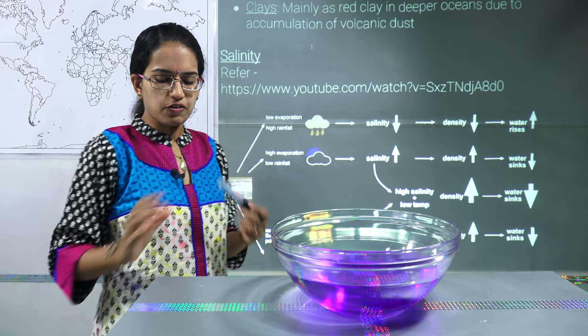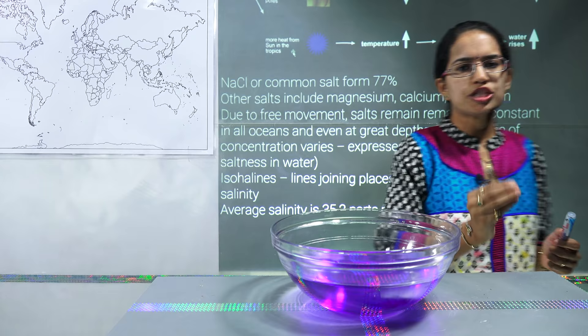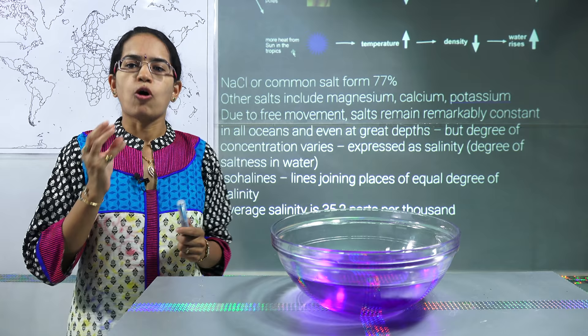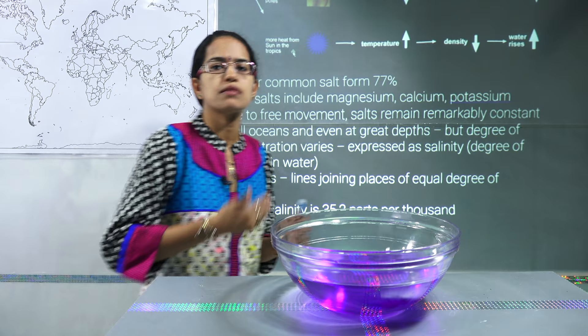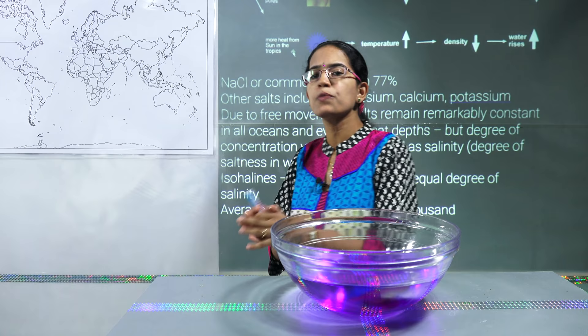Coming on to salinity — if we look at the ocean, 77 percent of the ocean's salt constituents are common salt or sodium chloride. However, besides sodium, you can see chlorides of magnesium, potassium, and calcium, but those are found in lesser or trace amounts compared to sodium chloride.